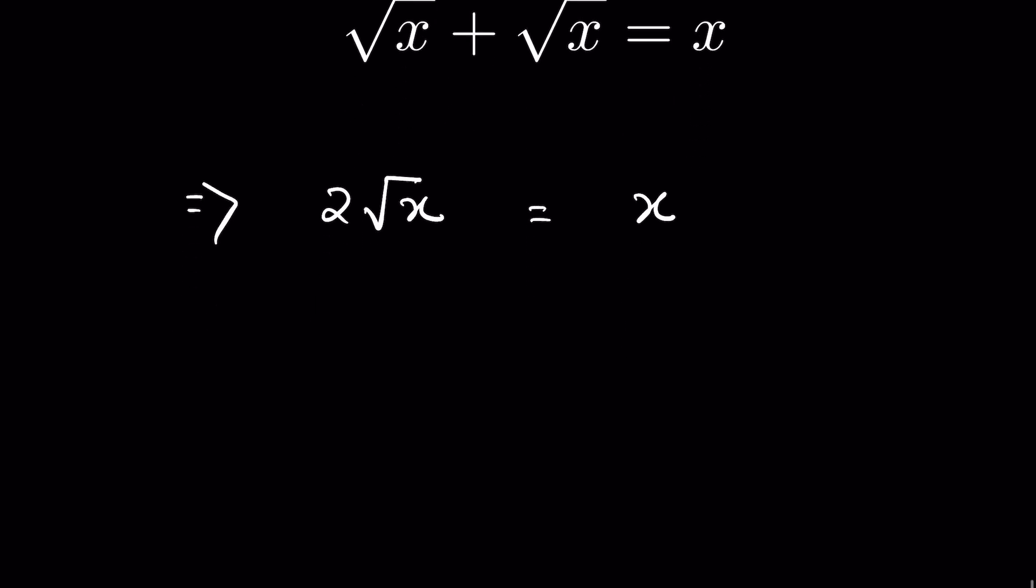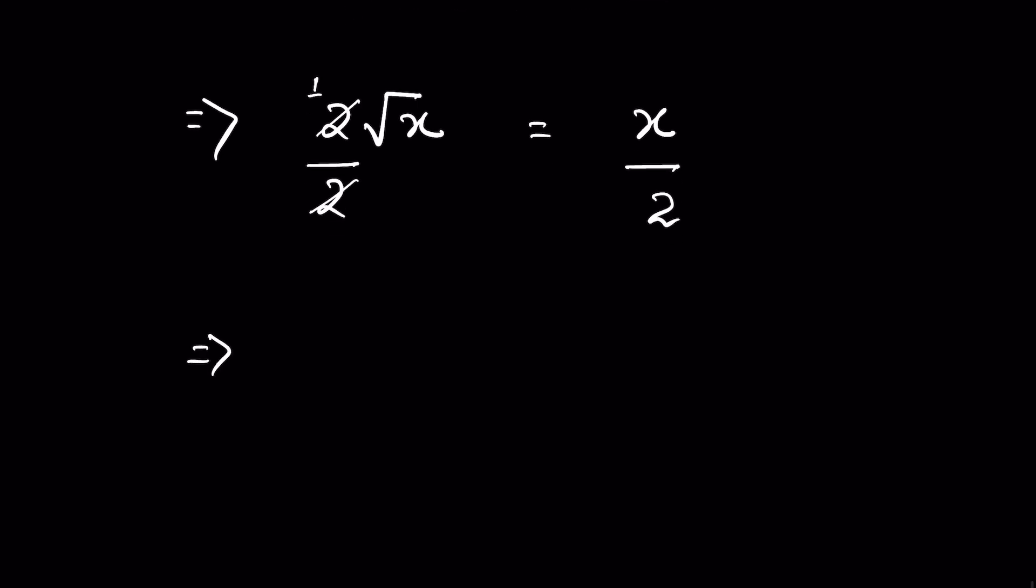Now let's divide both sides by 2. This 2 and this 2 gets cancelled. It is 1. So now we have square root of x equals x over 2.